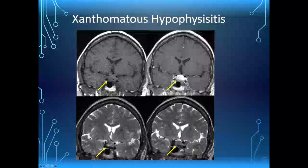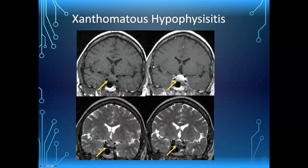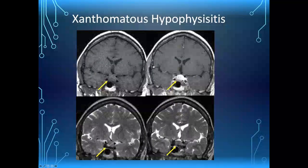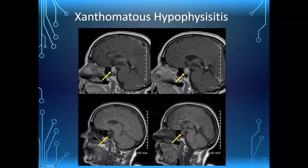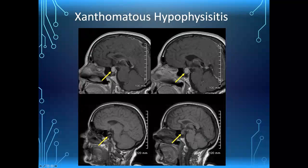This is xanthomatous hypophysitis — a big mass that avidly enhances and is T2 dark. Statistically, a macroadenoma would be your first choice here. It appears to flatten the pituitary tissue and invades the cavernous sinus. There's a swirly, non-homogeneous enhancement pattern — but that doesn't exclude a pituitary adenoma; it could also be a craniopharyngioma. We really can't tell these things apart until the surgeon puts it in the bucket and it goes to the pathologist.